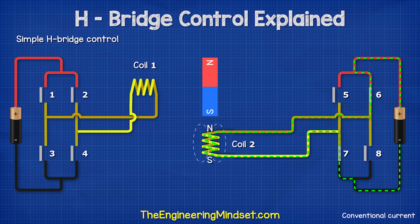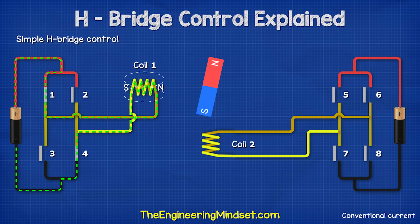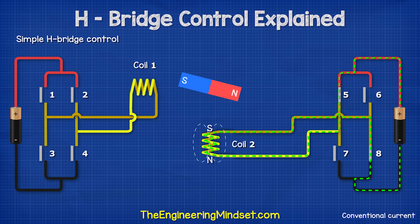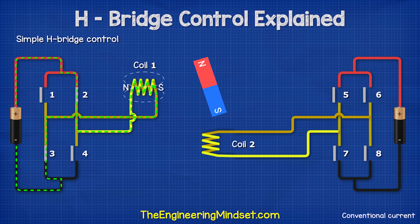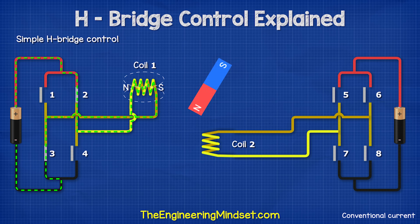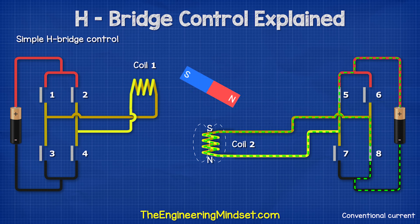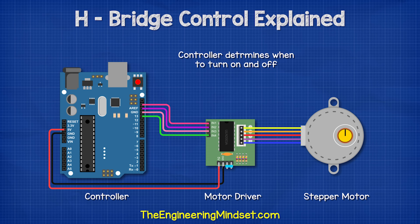Then we close switches 6 and 7 to rotate the rotor again. Then we close switches 1 and 4 to complete the rotation. The switch sequence continues, causing the rotor to turn. Reversing the sequence reverses the direction of rotation. Changing the frequency of switching controls the speed. The switches are electronic instead of manual, allowing us to program them to turn on and off with precise timing.